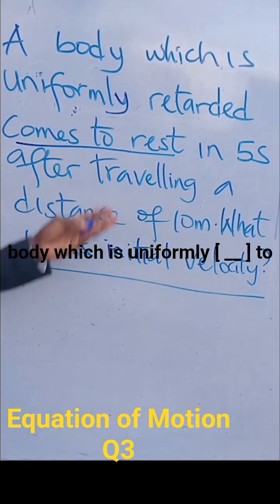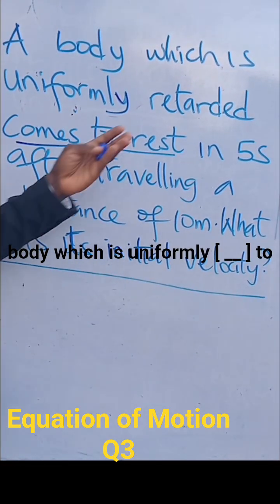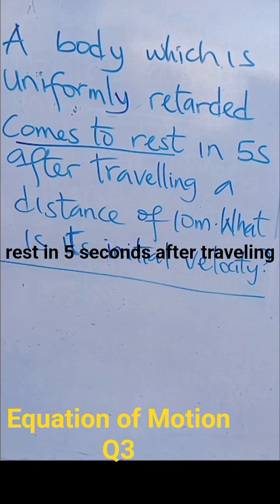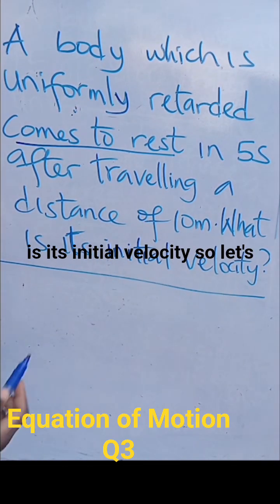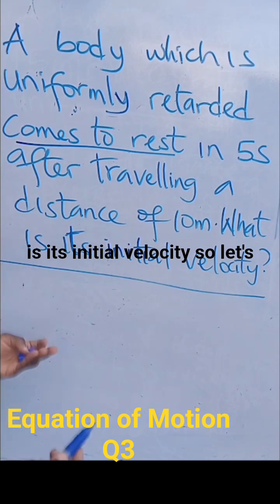We have this question: a body which is uniformly retarded comes to rest in 5 seconds after traveling a distance of 10 meters. What is its initial velocity?